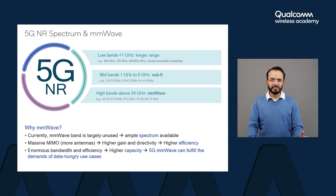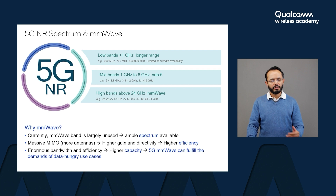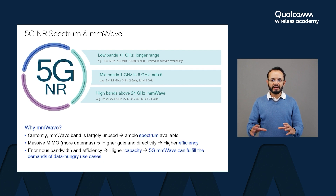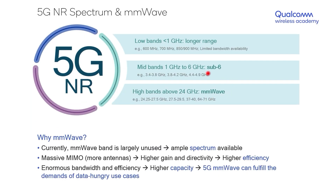5G can be deployed in either the sub-1 gigahertz band, the sub-6 gigahertz band, or the millimeter wave band. The core essence of 5G technology remains the same regardless of which band it is deployed in, though there will always be some practical and implementation-related differences. Sub-6 gigahertz 5G and millimeter wave 5G are two prominent flavors that are gaining commercial traction, especially in North America.